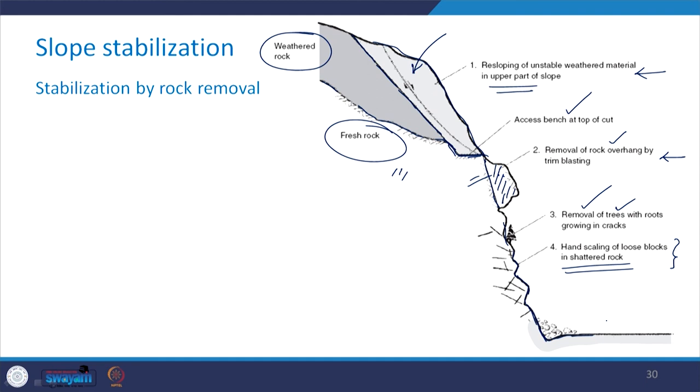I discussed various methods for the stabilization of rock slopes. Depending upon the condition and requirements in the field, you can choose an appropriate measure and go for the appropriate design before installing or applying them in the field for the stabilization of rock slopes. This finishes our discussion on this chapter, which was related to rock slope stability. In the next class, we will start our discussion on a new chapter: foundations on weak rocks.